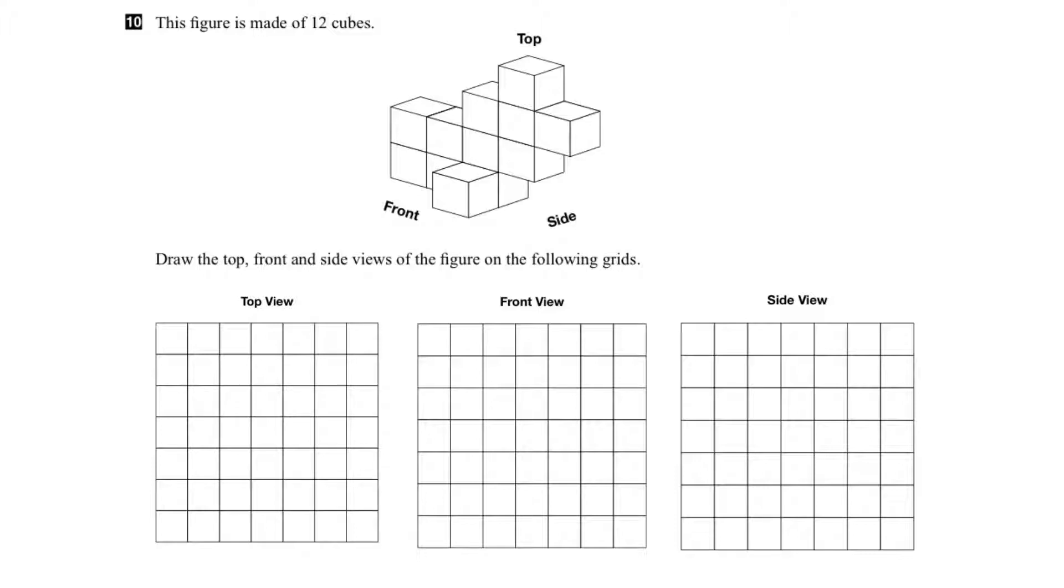First off, let's just count the cubes to make sure there's none that are hidden behind. So if we count them, there's 1, 2, 3, 4, 5, 6, 7, 8, 9, 10, 11, 12 cubes. So we know that they're all shown and there's none that are hidden behind.